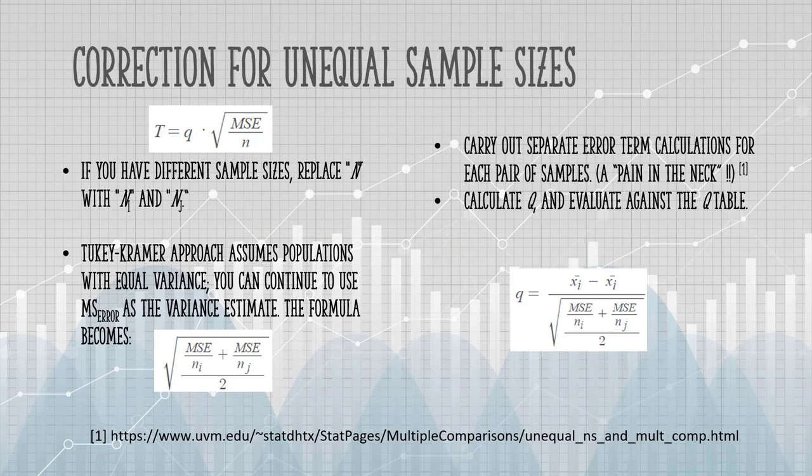That procedure assumes that you have an equal number of items in every sample. If you have unequal sample sizes, it gets a little more complicated. If you have different sample sizes, you're going to want to replace that N in the denominator with N sub I and N sub J. I and J are the two samples that you're comparing means for. There's a couple of ways to do this.